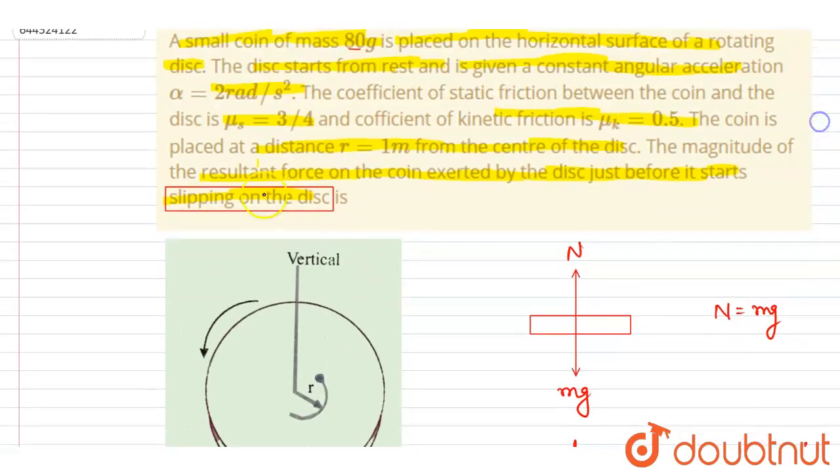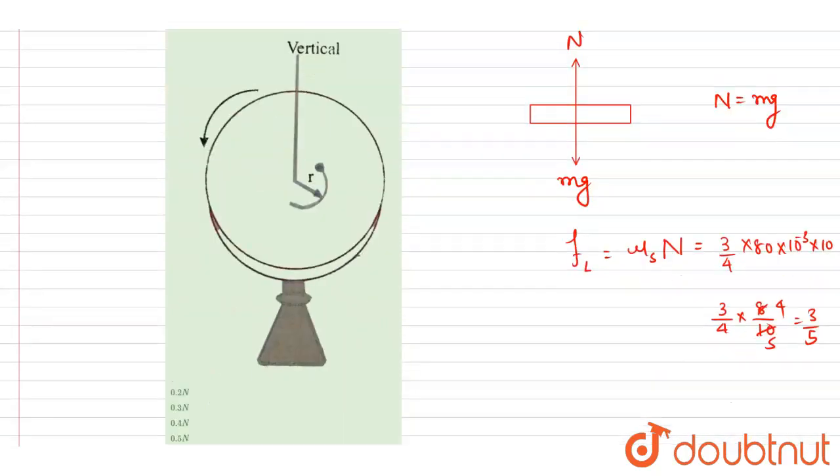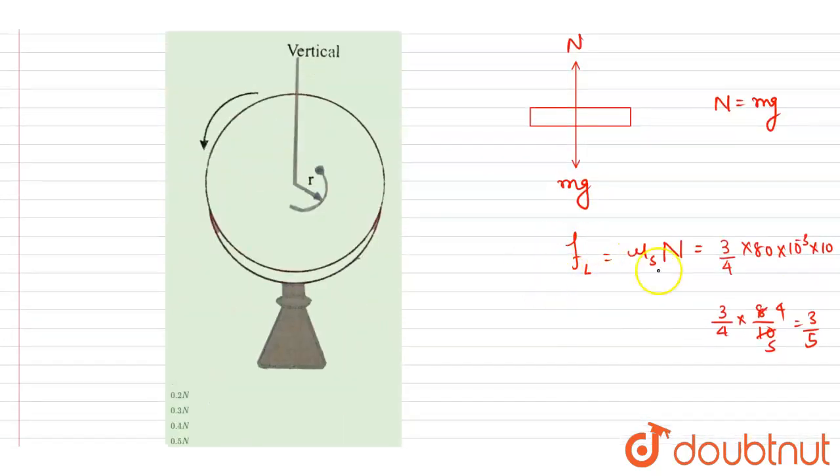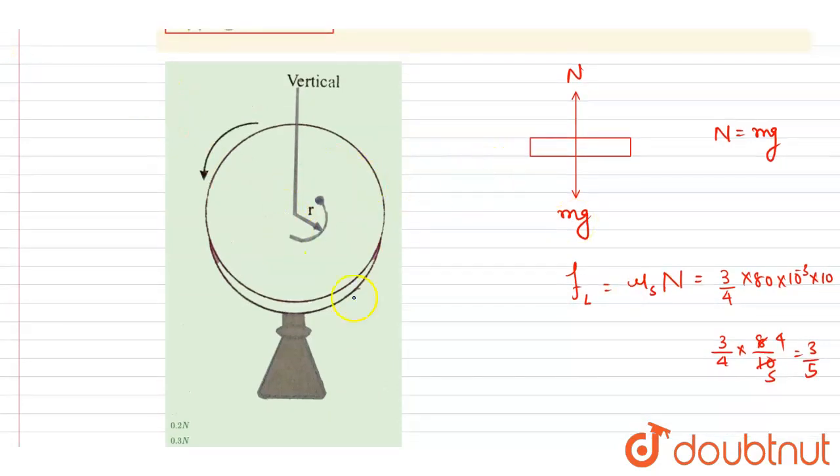So when it will just start, just before the, at the verge of slipping, then the coin will experience limiting friction right in this plane of the disc. Right, it can be like this, in this plane of the disc. So this will be the